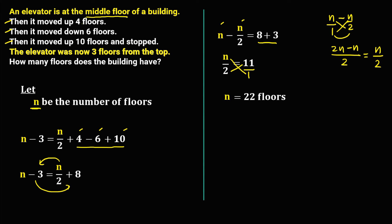But since in the problem the elevator starts at the middle floor, and there is no middle for even numbers, therefore to have a middle floor, just add 1 for this 22. So therefore, this building has 23 floors.